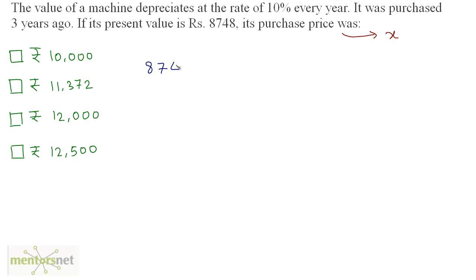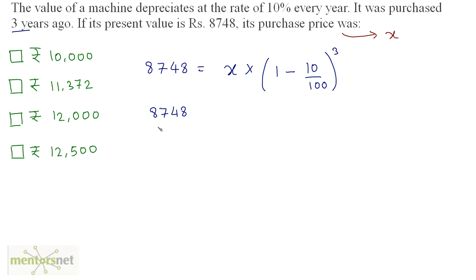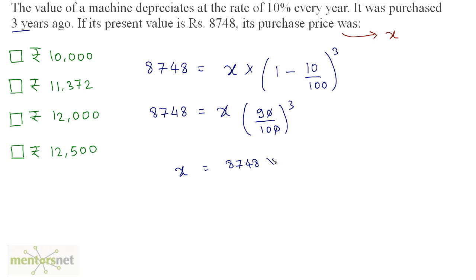So I can write: 8,748 equals the initial value x times 1 minus 10 upon 100, raised to n equals 3. This equals 8,748 equals x times (100 minus 10) is 90 upon 100, cubed. Cancelling the zero, we have x equals 8,748 times 10 cubed upon 9 cubed.